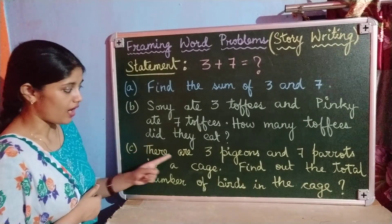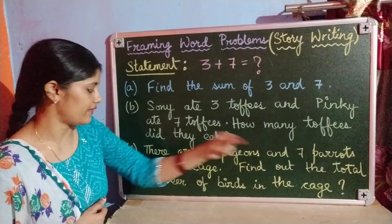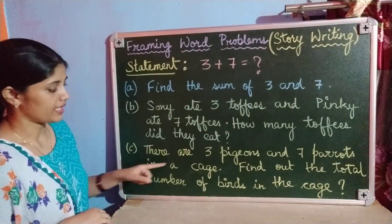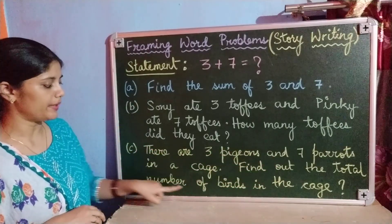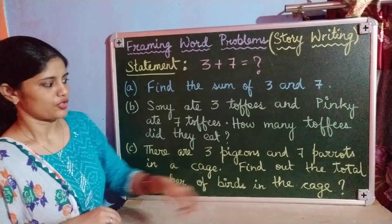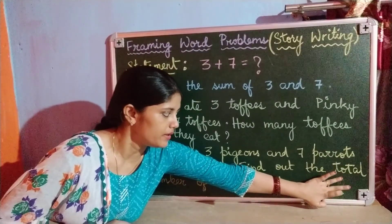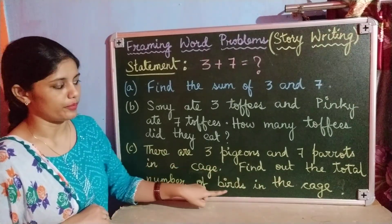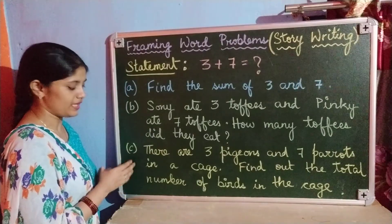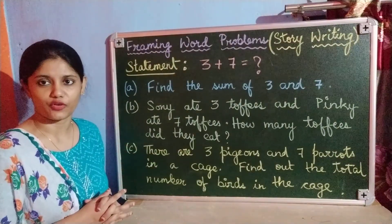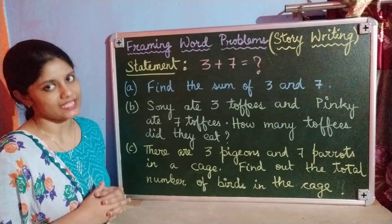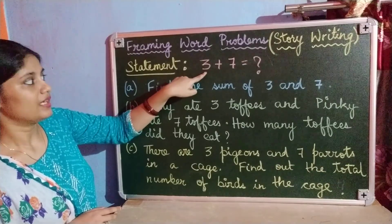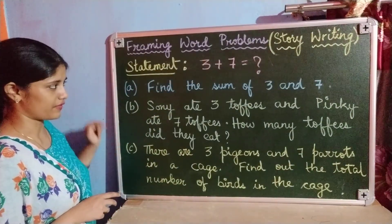The third word problem: There are 3 pigeons and 7 parrots in a cage — that is, a pinjra. Find out the total number of birds in the cage. This word problem is also asking for the sum of 3 and 7. So children, you have seen that this particular statement is expressed in 3 different ways.